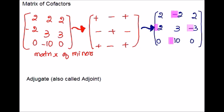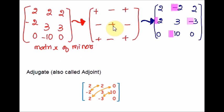The next concept is adjugate, also called adjoint. We found the matrix of minors and used the checkerboard to find the matrix of cofactors. Now to find the adjugate, we transpose all elements of the previous matrix — in other words, swap their positions over the diagonal. The diagonal stays the same. The off-diagonal elements are swapped. You can compare it with the matrix of cofactors. Please make sure that the diagonal stays the same.